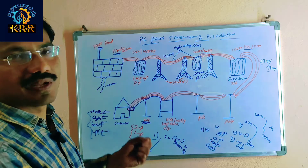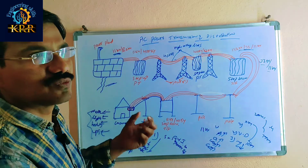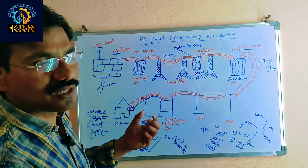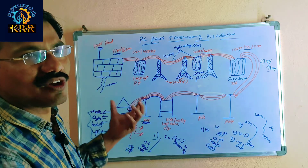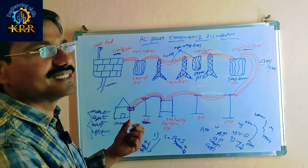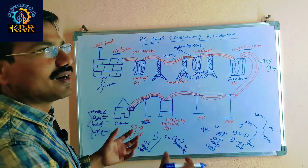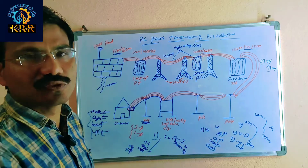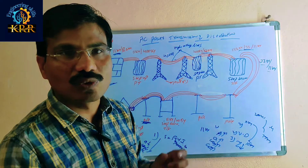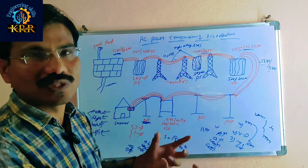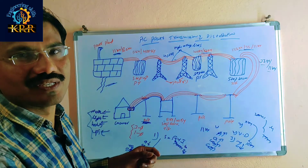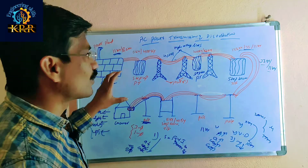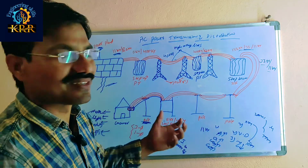For controlling purposes — how much demand there is — this coordination is handled using a control system. We can control the system, and the control system is a separate subject.